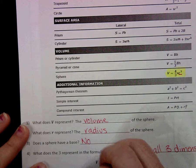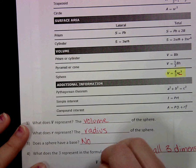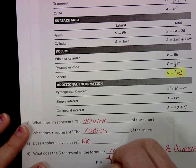So our formula, once again, is V equals 4 thirds pi R cubed.